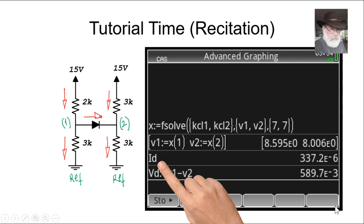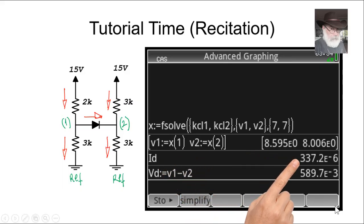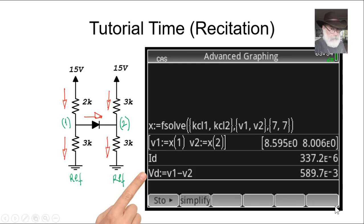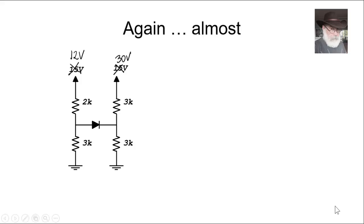With those node voltages, we compute the current and voltage in the diode. Typing Id in the calculator gives the current in the diode: 337 microamperes, flowing the right way from node 1 to node 2. The voltage in the diode is V1 − V2 = 0.6 volts approximately. So that diode is on, conducting. It is not a short circuit — the voltage across it is 0.6 V — but it is working.